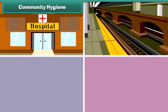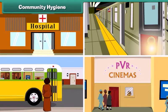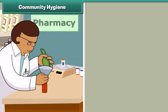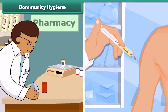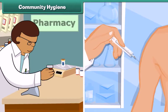Next, we must ensure community hygiene by keeping public places like hospitals, railway stations, bus stands, and cinema halls clean, and by making medicines and vaccines available to people to cure and prevent diseases.